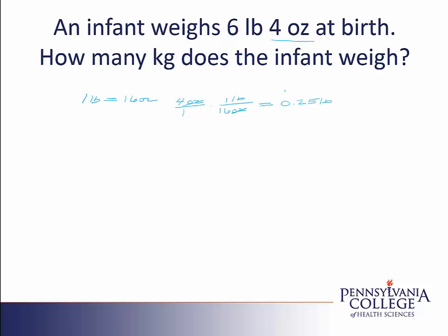Now I want to go back and work with the pounds as well. So the total weight for this infant is 6.25 pounds. I'm going to place that over 1 just to make it into a fraction. I've taken the 0.25 — my first answer — and added it to the 6, so that I have the entire weight of the baby all in pounds.